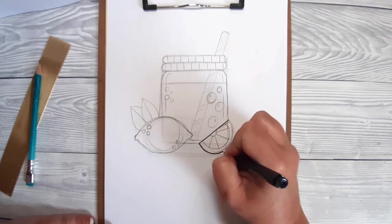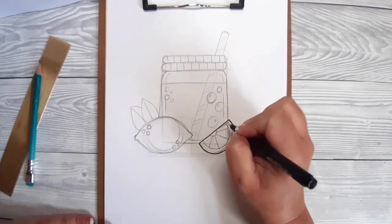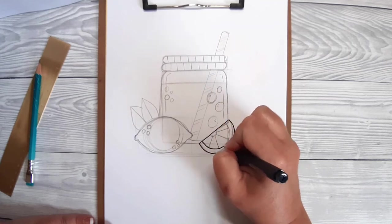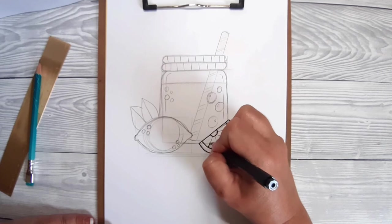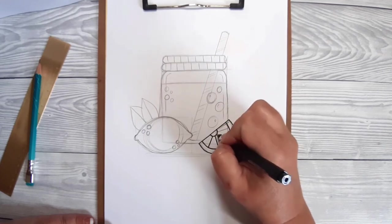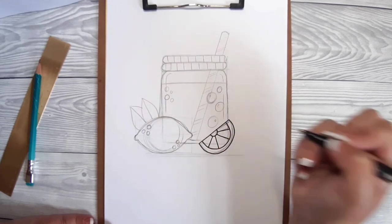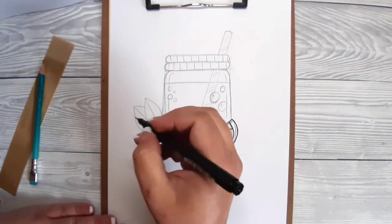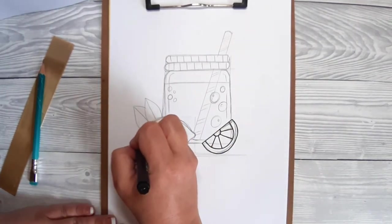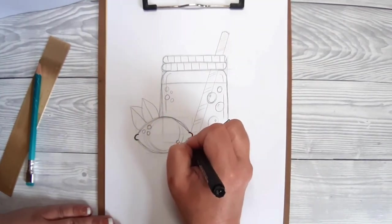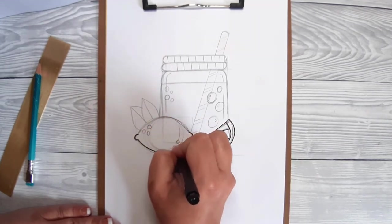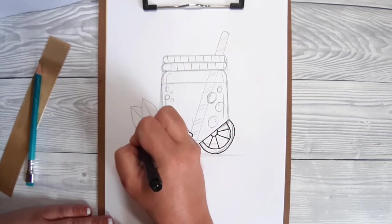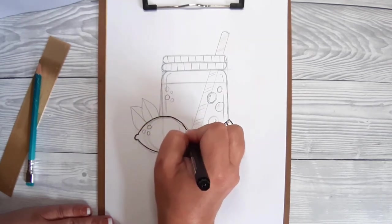My number one tip for outlining your drawing would be confidence, confidence, confidence. The slower you take a line, the more chance there is of that line going wrong. I'm not saying if you do it too fast that it's going to be perfect, but just remember that if you have the confidence to start and finish a line in one swoop, you've got a much better chance of the line being what you want it to be.